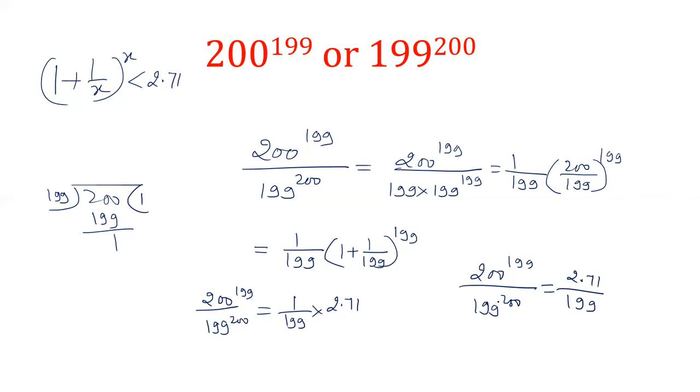So the ratio of these two numbers 200 power 199 on 199 power 200 is 2.71 on 199. So it tells us that 200 power 199 is less than 199 power 200. So by this method we can say that the value of 200 power 199 is less than 199 power 200.